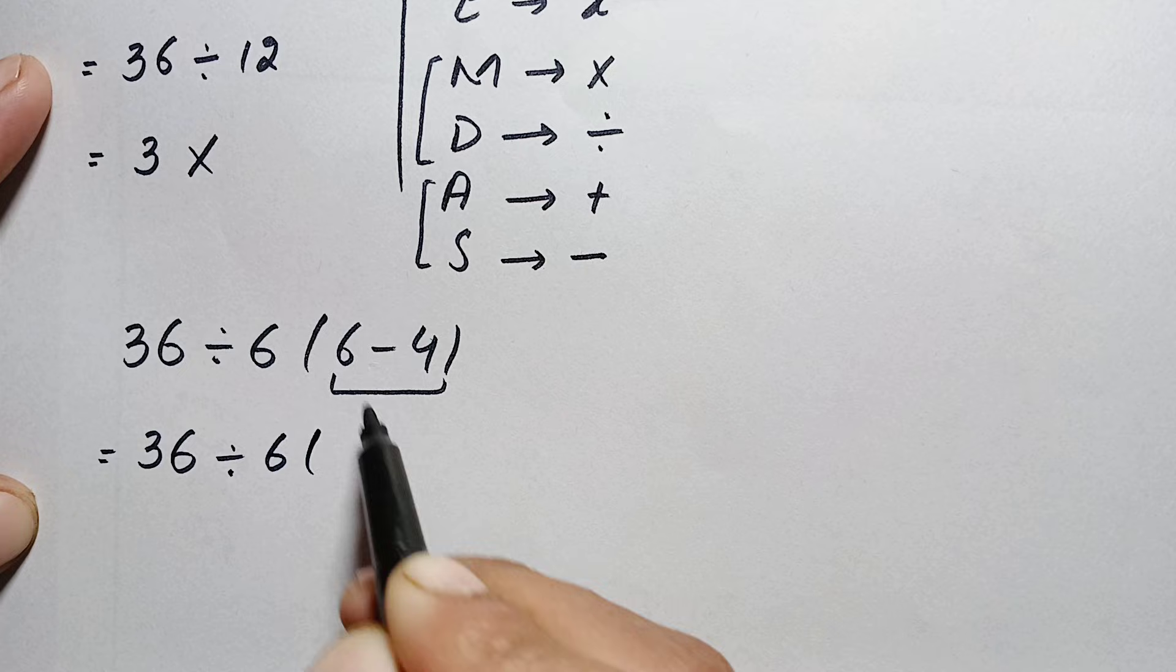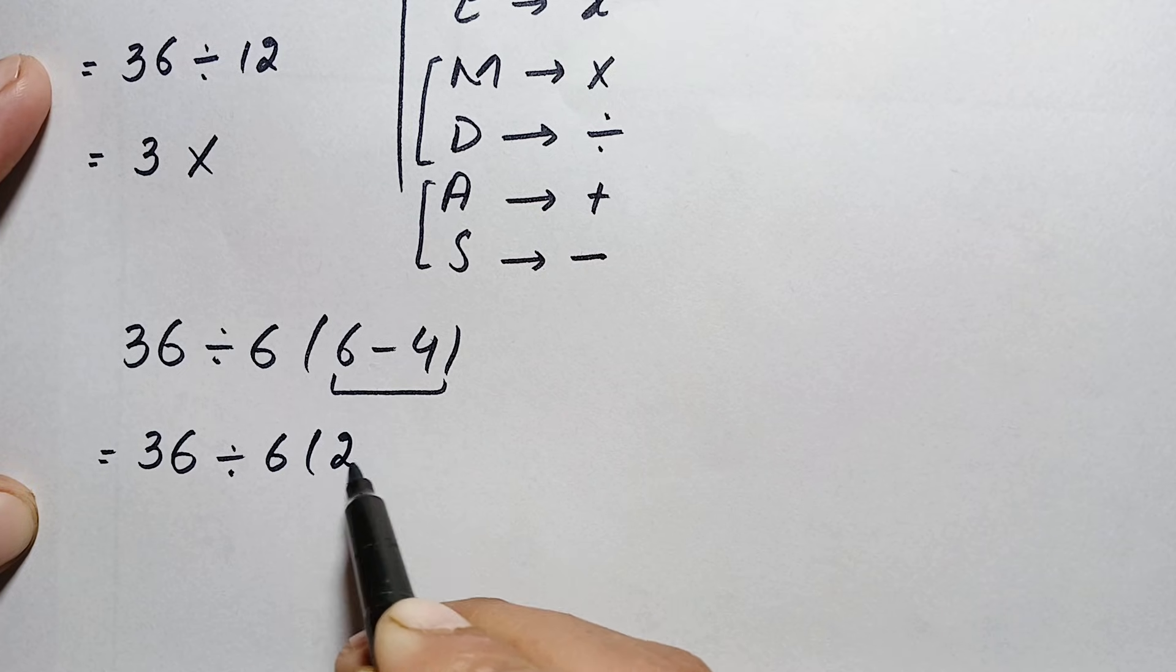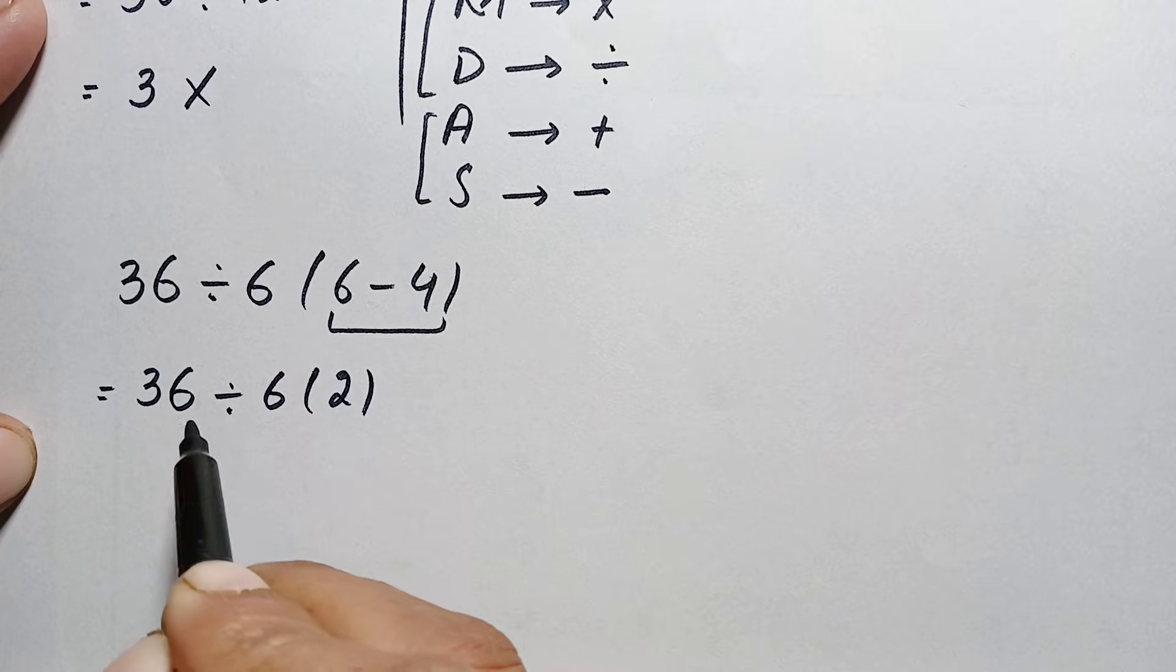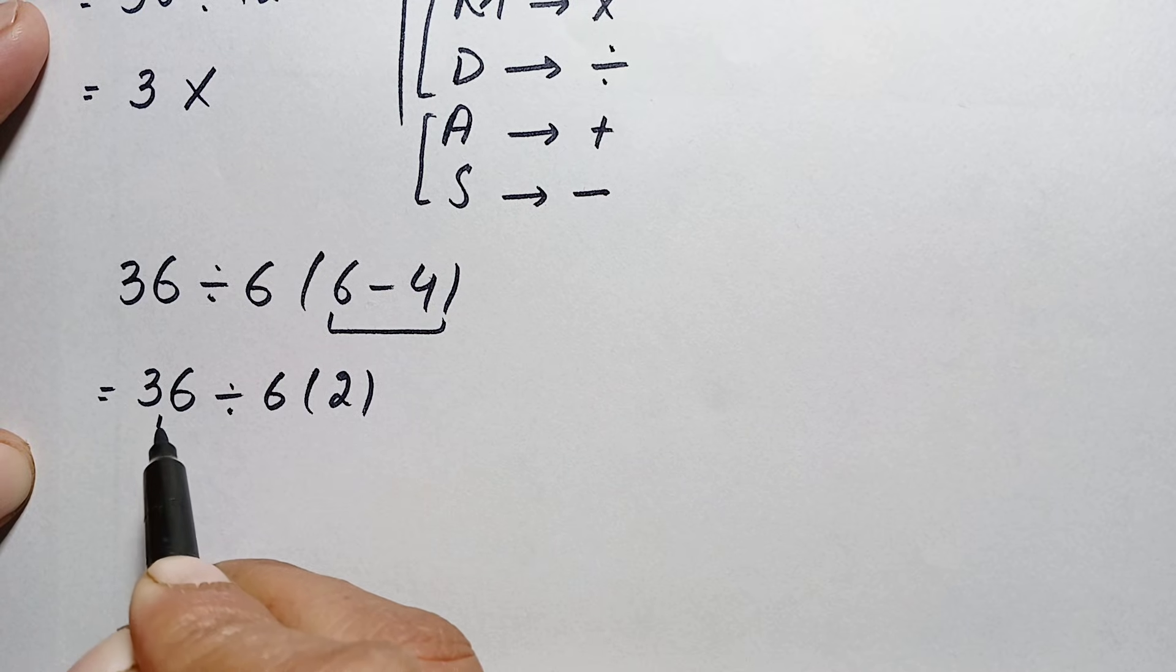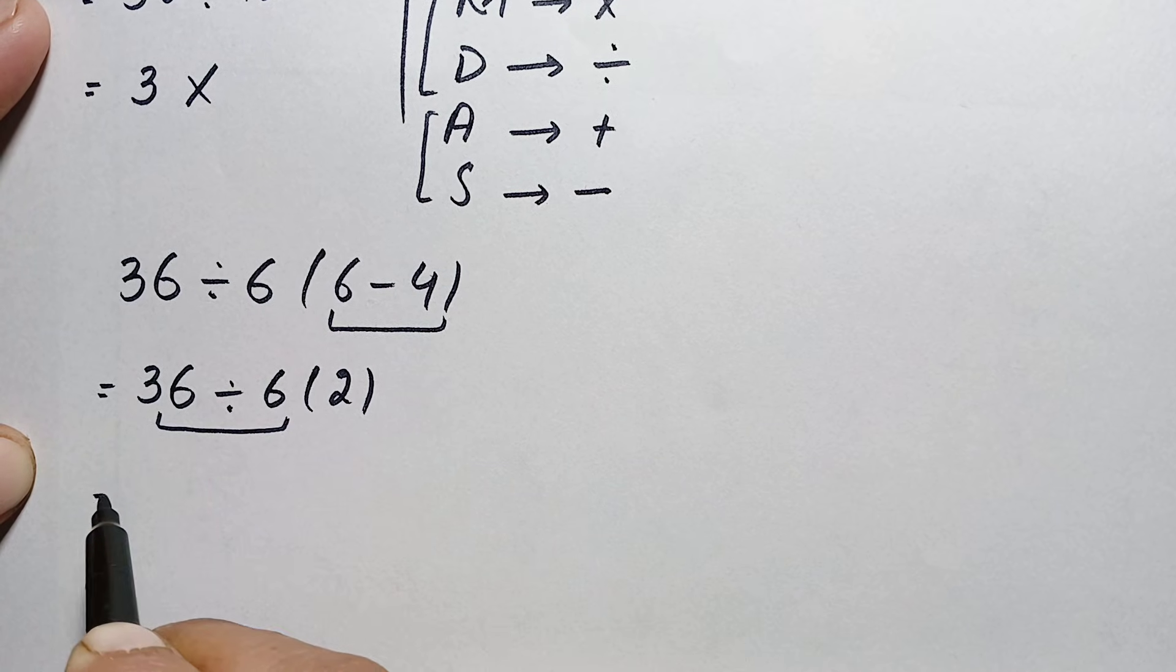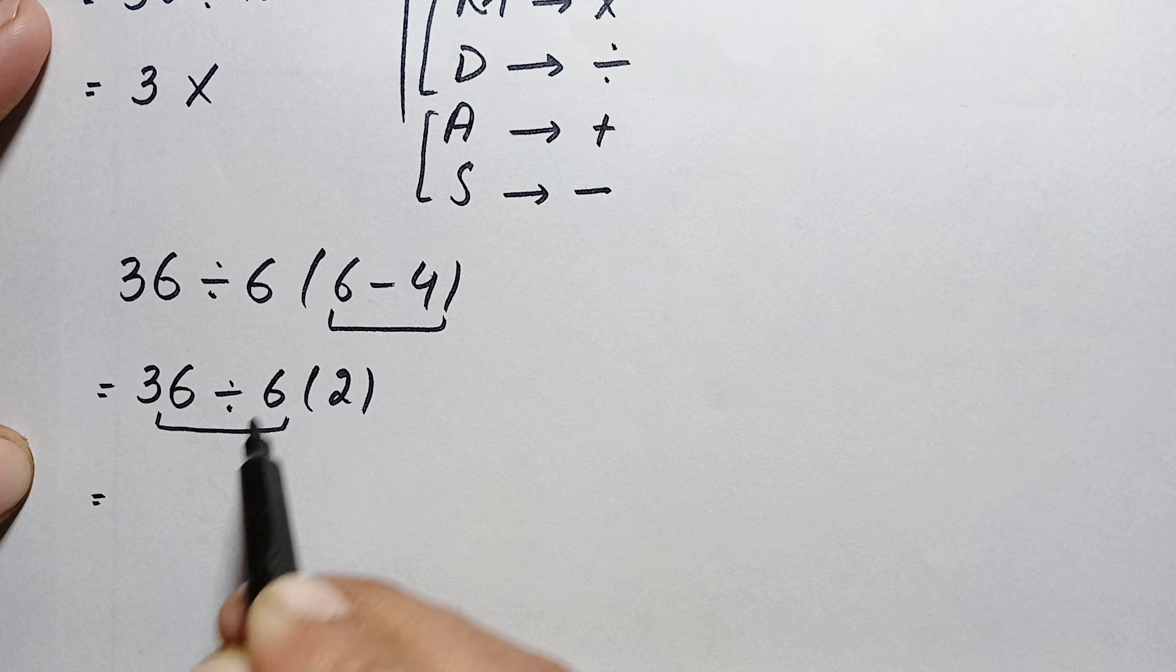Now we have two operations: division and multiplication. First we will do division on the left hand side, so 36 divided by 6 is simply 6, times 2.